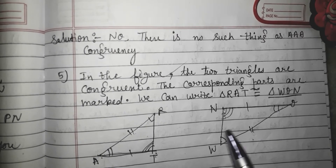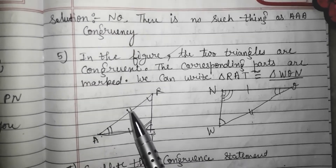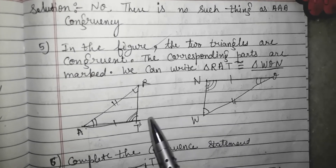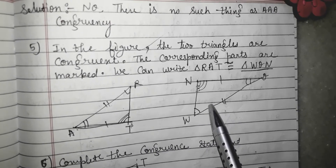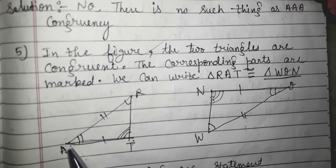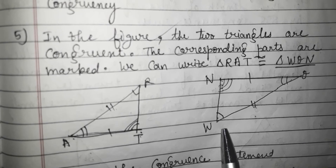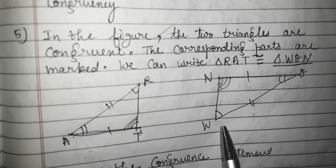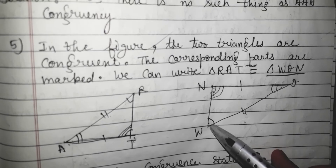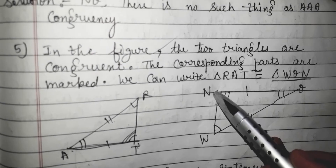You have to write the name here. I am starting from angle R, going to A, then going to T. Then I will use the same sequence in the second triangle. I will start from the first angle W, then go to the second angle Q, then go to the third angle N.